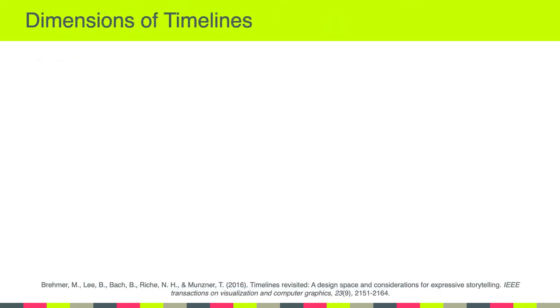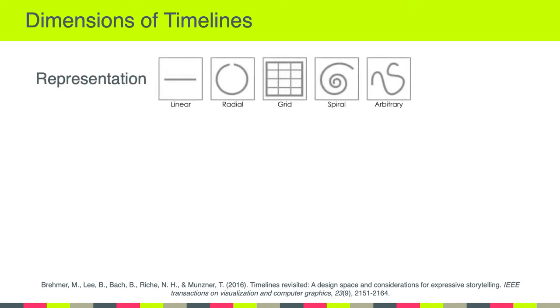I've assigned a reading that's going to do a deep dive into timelines. As you will see, there are three important dimensions to timelines. One of those dimensions is the representation dimension — this is how you represent time. You can do that in a linear fashion, a radial fashion, using a grid, a spiral, or some arbitrary representation of time.